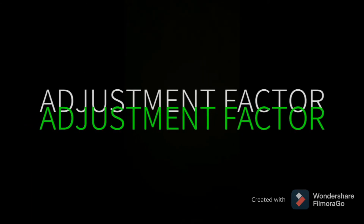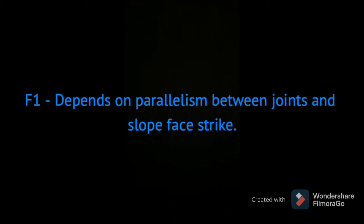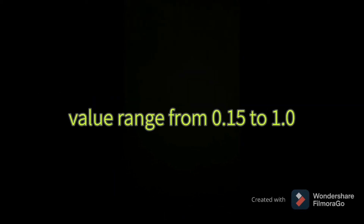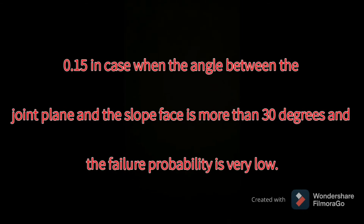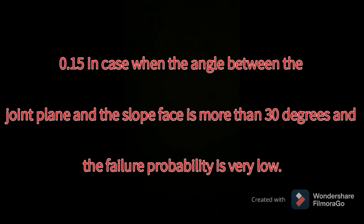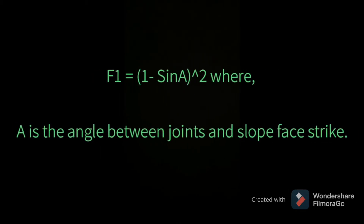Factor 1 depends on the parallelism between joints and slope face strike. The value range is 0.15 to 1.0. A value of 0.15 means the angle between the joint plane and the slope face is more than 30 degrees and the failure probability is very low. A value of 1.0 means both are nearly parallel.